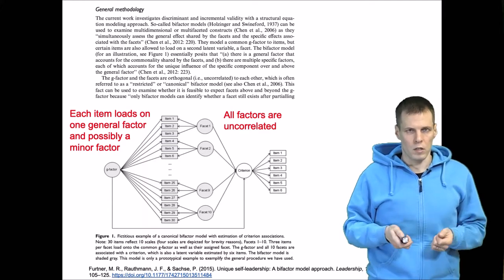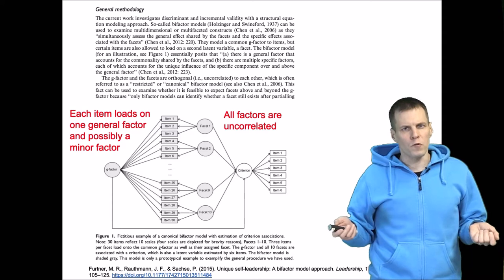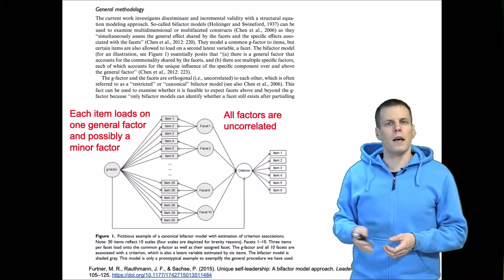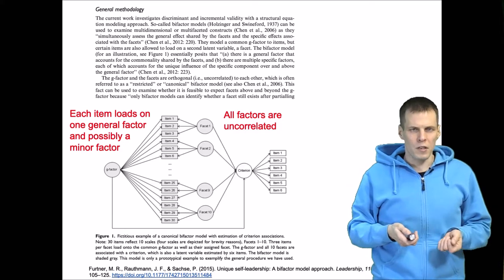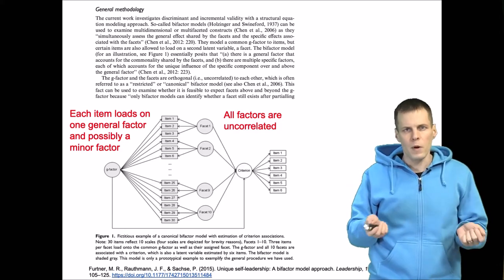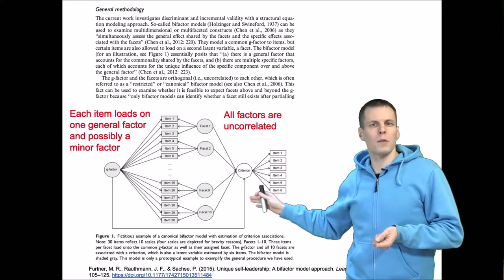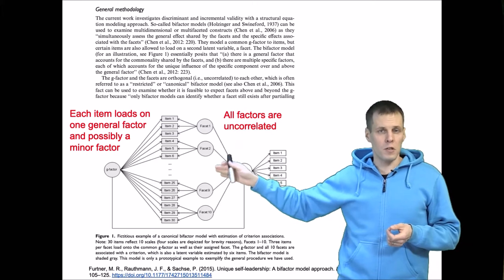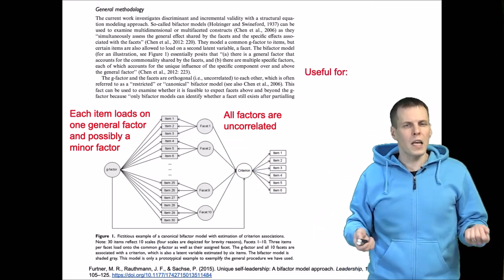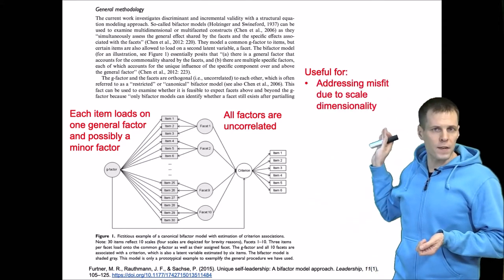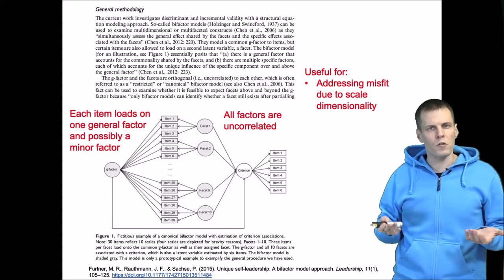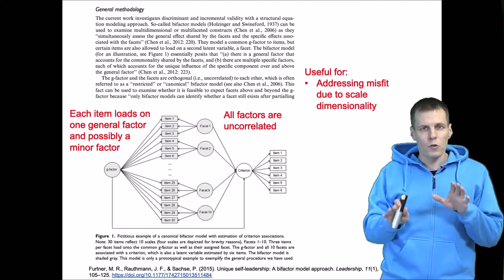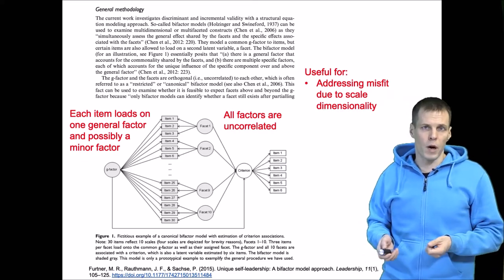I'll talk about identification of these models in a different video. So why would this kind of model be useful? Quite often when you develop a scale — particularly if you have many items like 30 — the scale is not exactly unidimensional, and sometimes the lack of unidimensionality is a key feature of your study. Bifactor models allow you to assess misfit due to scale dimensionality, for example when a chi-square test fails because you actually have two different dimensions in the scale.